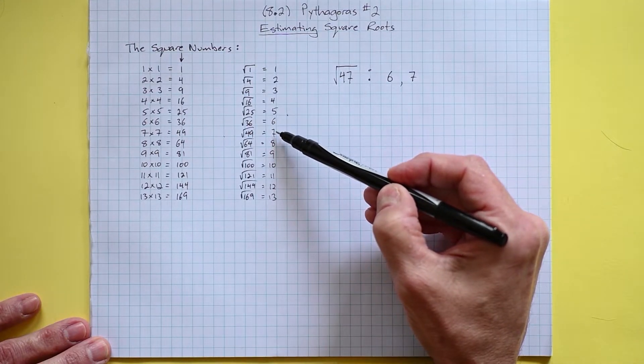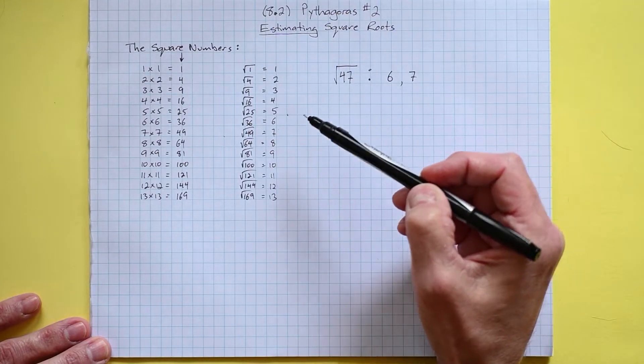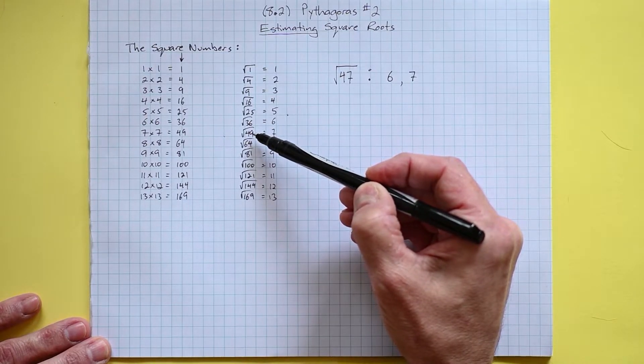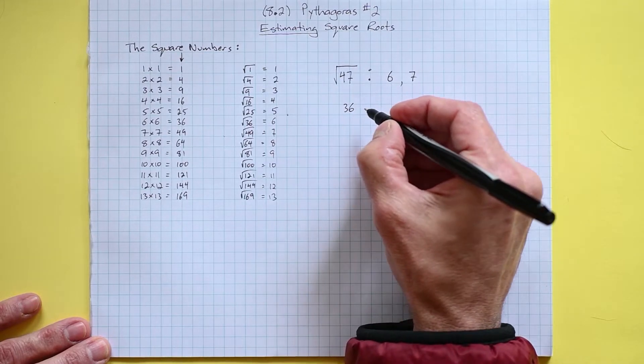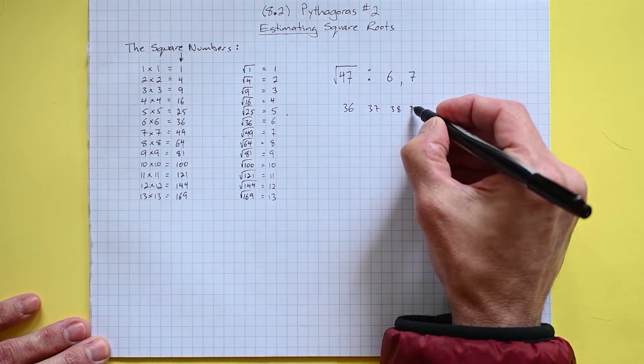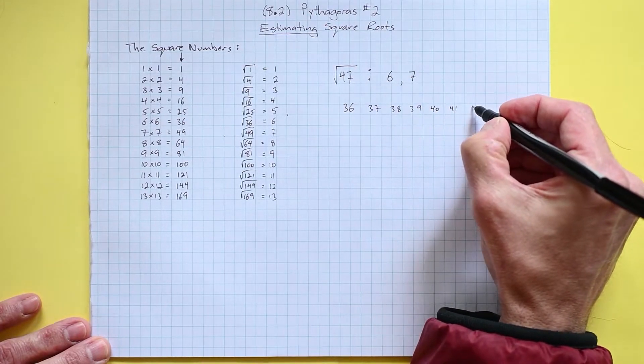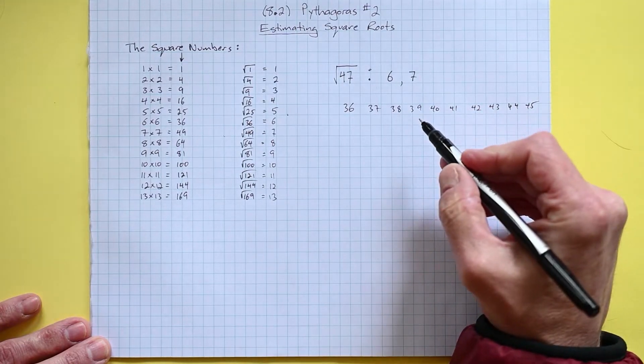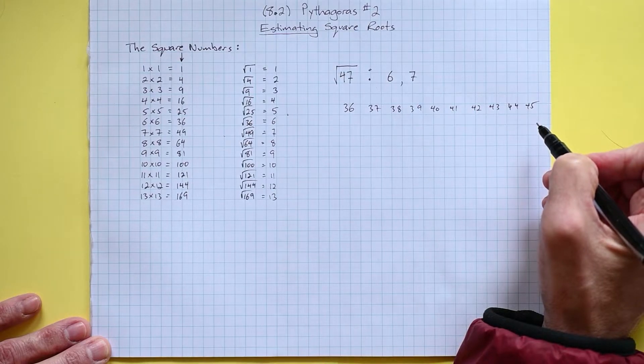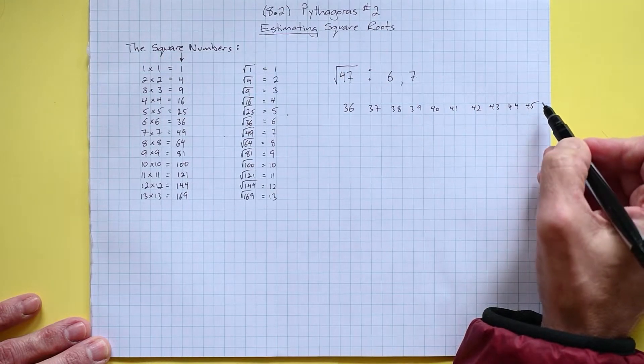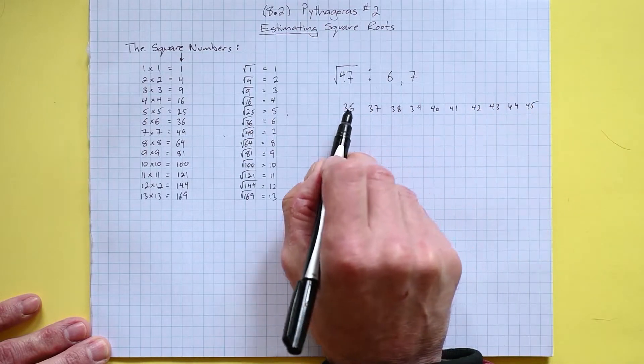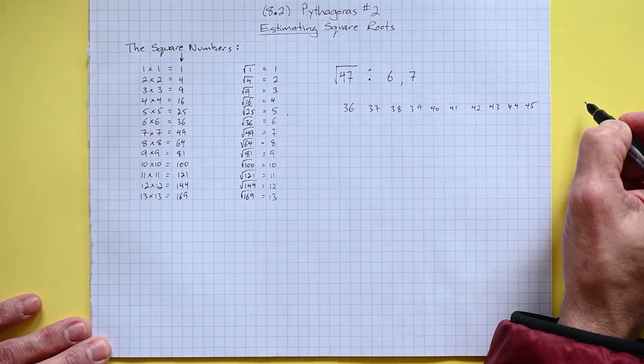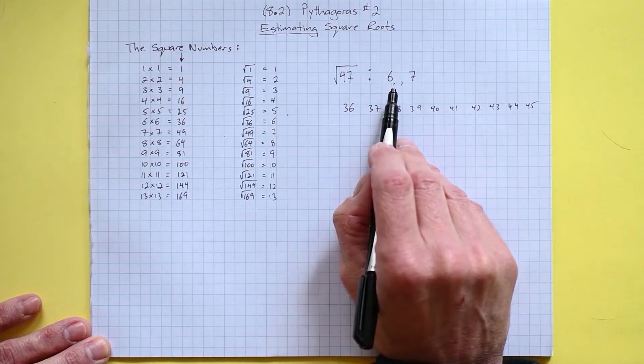So the next question becomes, are we closer to the 6 or to the 7? Let's look back at our original value 47. If you were to place it between these two on a number line, where would it land? Well here's 36, 37, 38, 39, 40, 41, 42, 43, 44, 45, and it's going right off the end of my page. But you can see quickly that we are far closer to the 49 than we are over here to the 36.